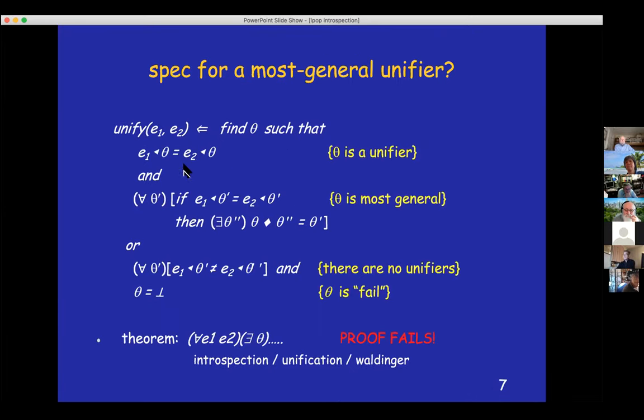So initially we started with this specification for a most general unifier. We want to find a substitution theta, which is, first of all, a unifier. And second of all, it's more general than any unifier. So if theta prime is some unifier, we can get from theta to theta prime by composition with some bridge substitution theta double prime. That's in the positive case in which there exists a unifier, but it could be that the expressions are not unifiable, in which case we return a special symbol fail, which says that I cannot unify these two expressions. So from this specification, we start with a theorem that for all inputs, e1 and e2, there exists an output theta that satisfies this condition. But lo and behold, the proof fails. We cannot complete the proof. Why is that?